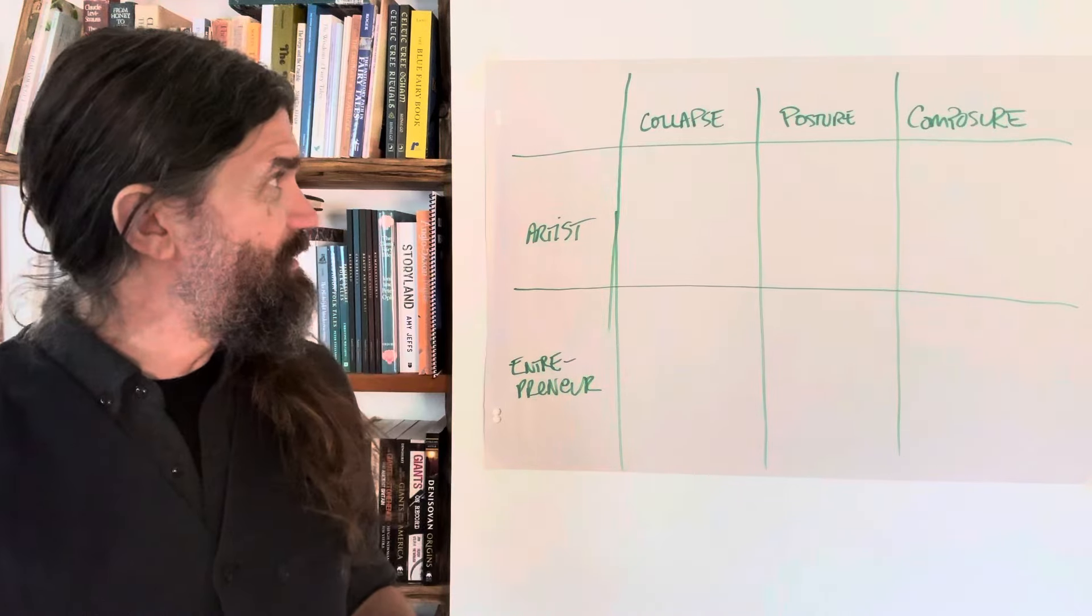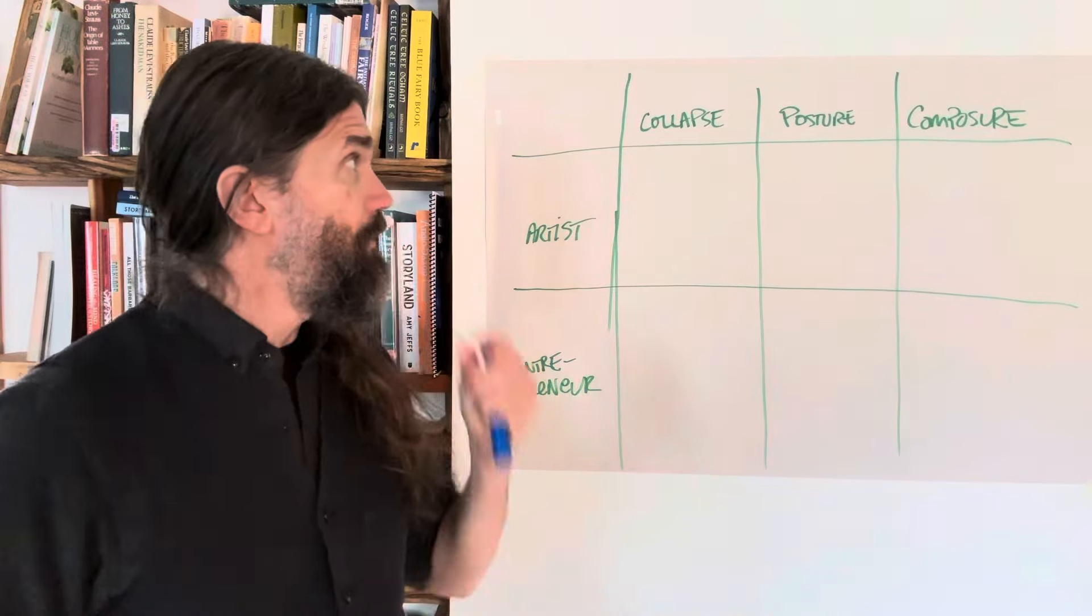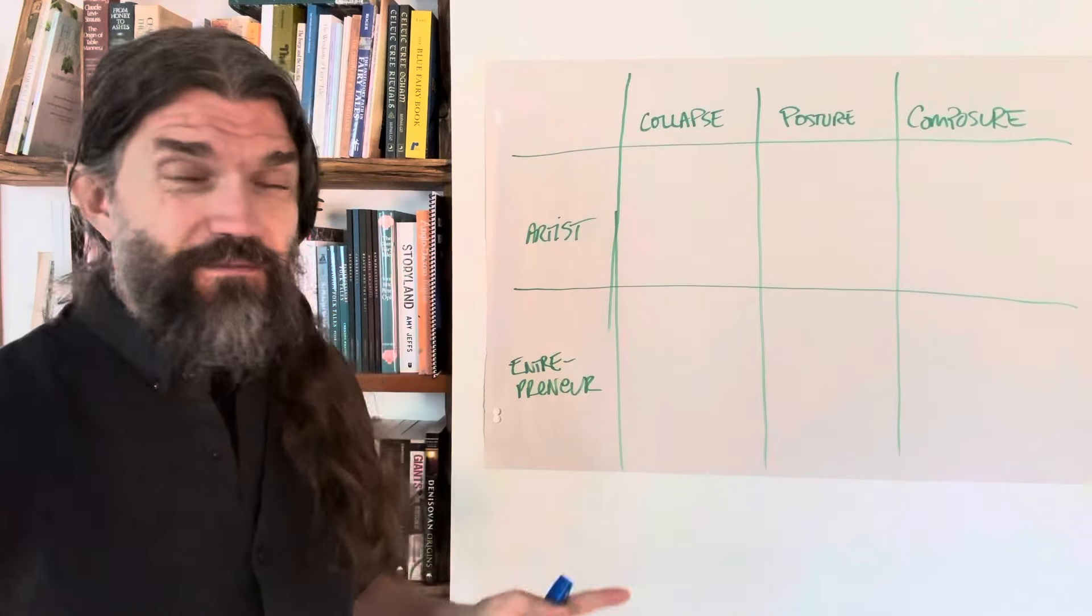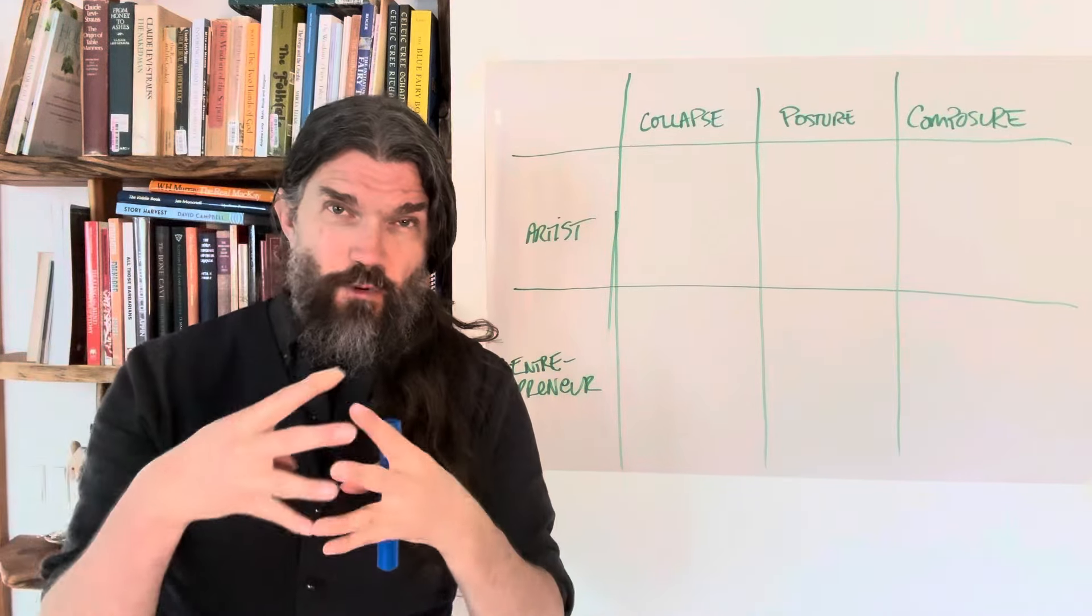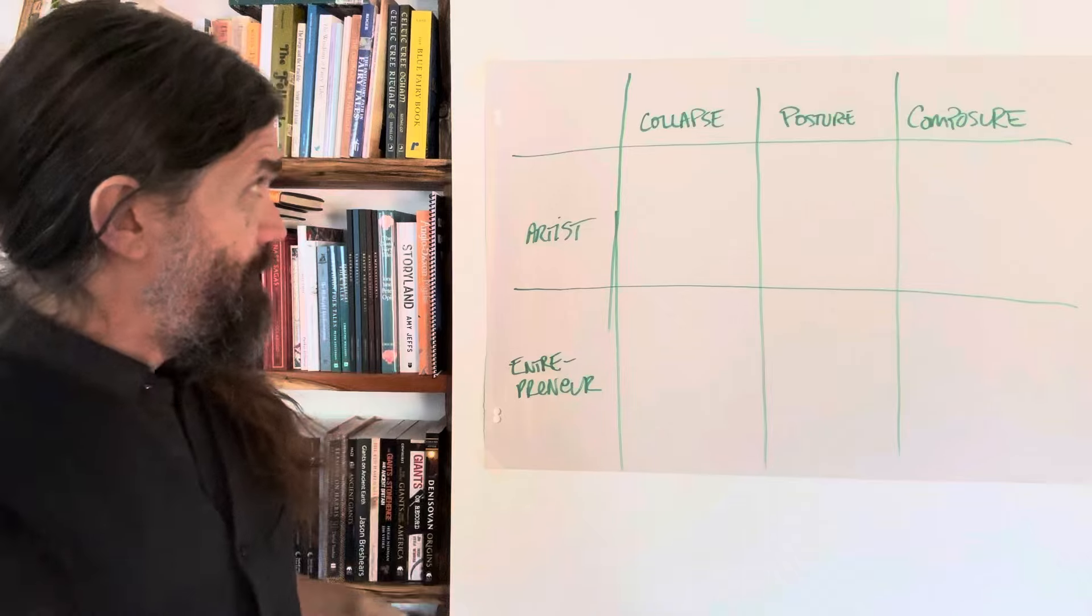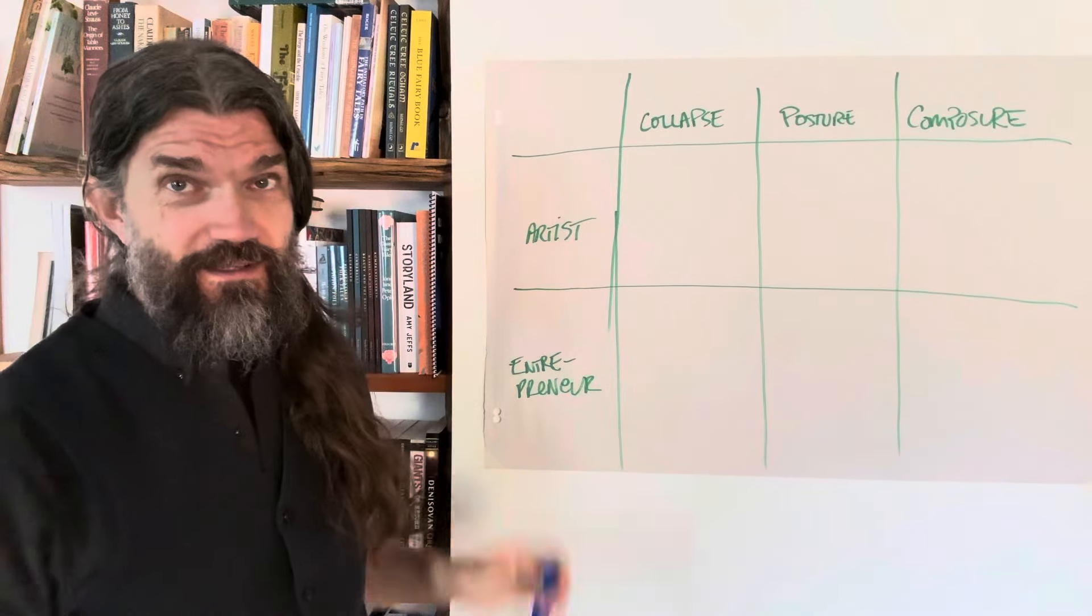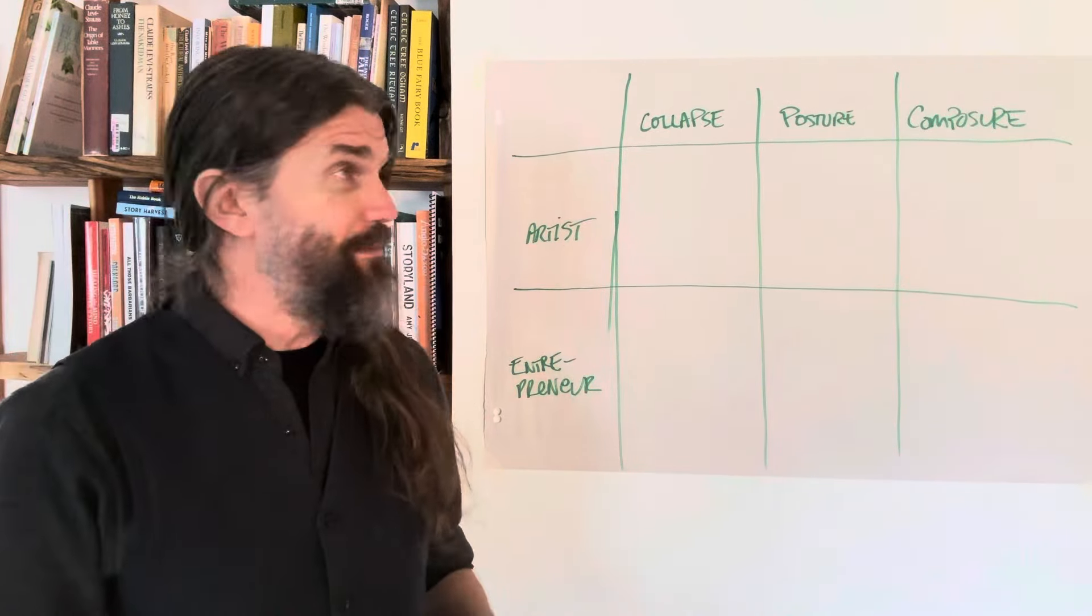Hi there, Tad Hargrave from Marketing for Hippies, and I just wanted to share something I'd come up with. Many of you have heard me talk about the artist versus the entrepreneur as the two main archetypes or dynamics in business.